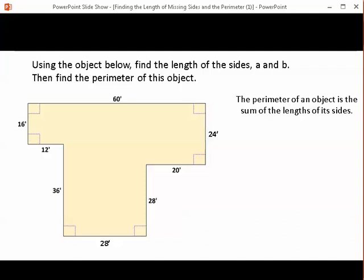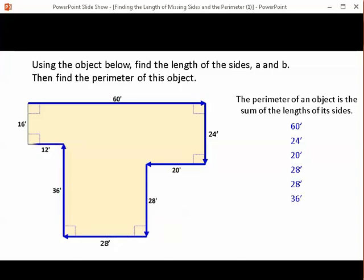And what about the perimeter? Well, to find the perimeter, you simply add all of the lengths of the sides together. By definition, the perimeter is the distance around the outside edges of an object. So if we add all these numbers together, this is going to give us 224 feet. So the perimeter of this object is 224 feet.